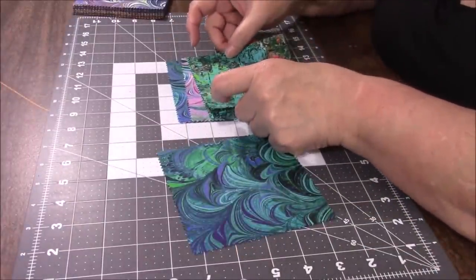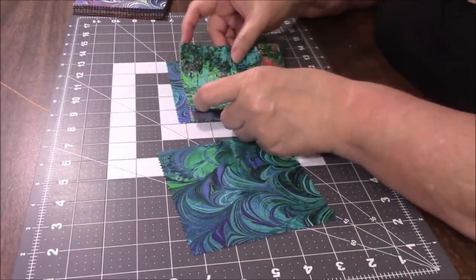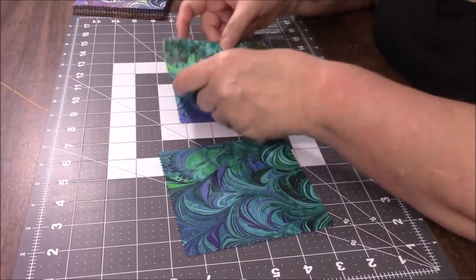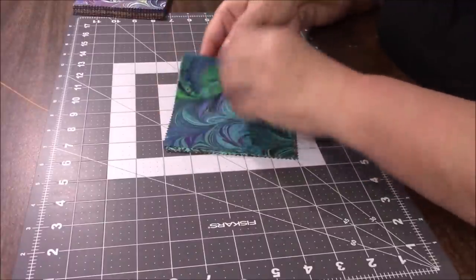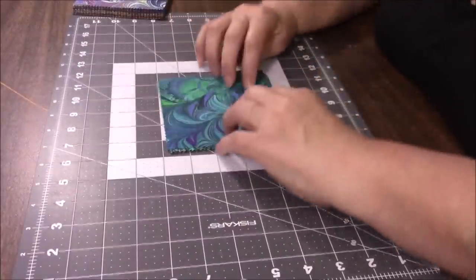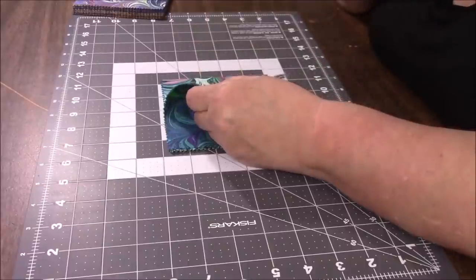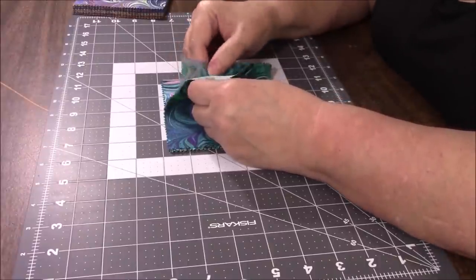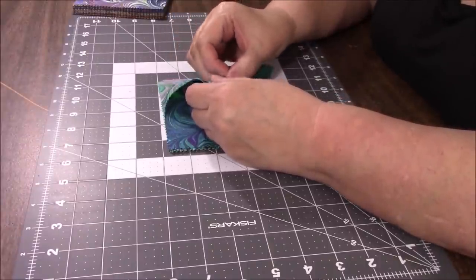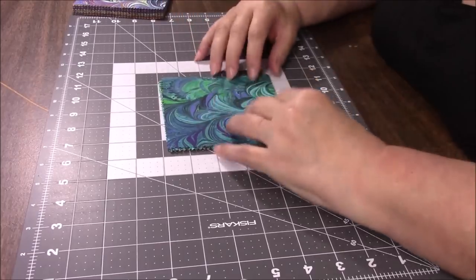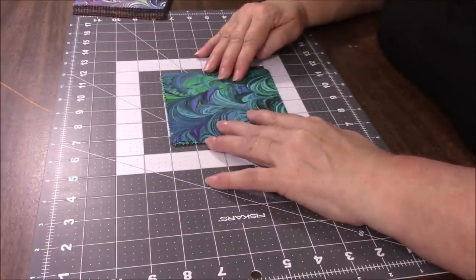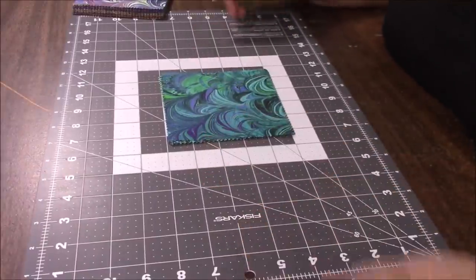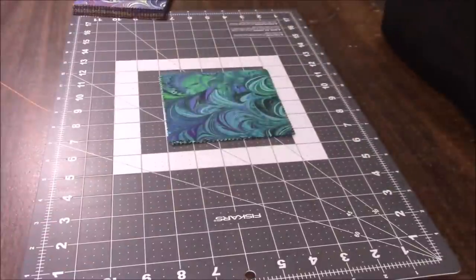But that's okay because we have wiggle room because we are cutting 2-inch squares. And so there's going to be extra. So I'm just going to cut a half an inch off each end on each side.